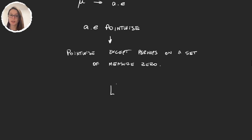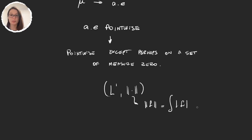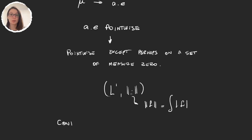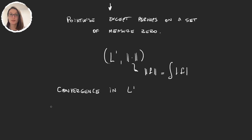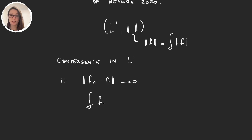Almost everywhere convergence means it converges pointwise except on a set of measure zero. We also introduced the L1 space, where the L1 norm is defined as the integral of the modulus of f. This norm gives us a new mode of convergence: convergence in L1.